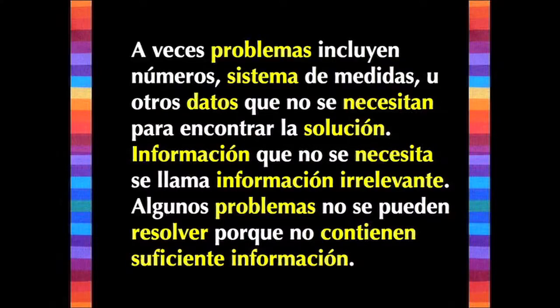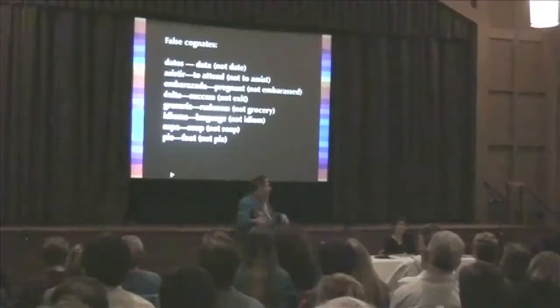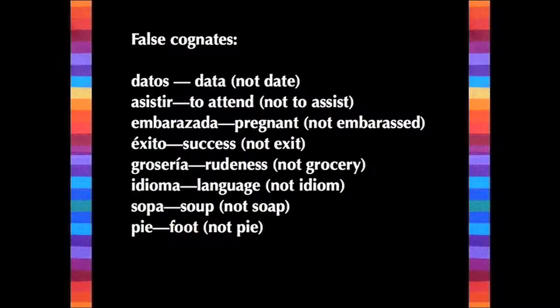We have to be careful about overgeneralizing because there are things called false cognates. For example: 'datos' means data, not date; 'assistir' means to attend, not to assist; 'idioma' is a language, not an idiom. So we have to be careful about not overgeneralizing.